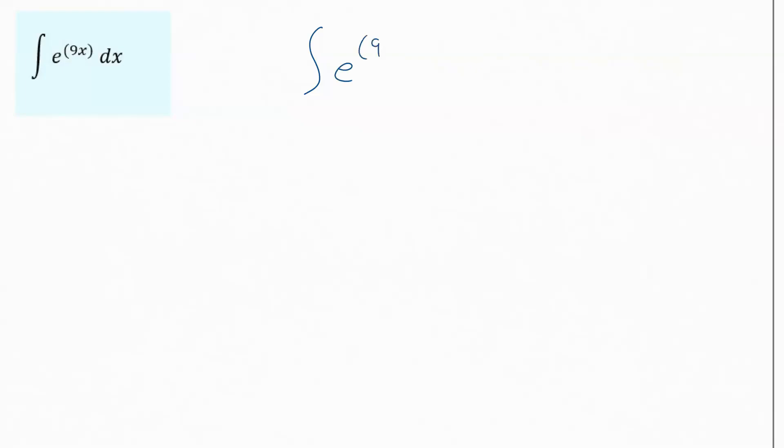So this is the indefinite integral of e to the 9x dx. Remember that the integral symbol up in front is just directions telling you to take the antiderivative of this equation, and then the dx is also directions just telling you what variable you care about.